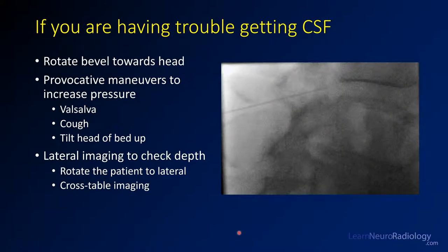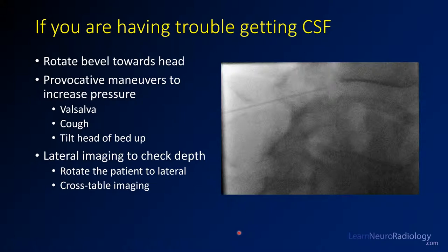As you advance and do more of these procedures, you'll get a sense of how deep you need to go and you'll feel the resistance of the ligamentum flavum — it typically feels like the rubber stopper on the top of a lidocaine vial. You can do provocative maneuvers to help get CSF: rotate the bevel toward the head, have the patient bear down or Valsalva, have them cough, or tilt the head of the bed up to increase intracranial pressure. If you're still having trouble, check with lateral imaging to assess depth. You can rotate the C-arm into a cross-table position, do a lateral radiograph, or rotate the patient into lateral — it is safe to rotate the patient with a needle in their back.